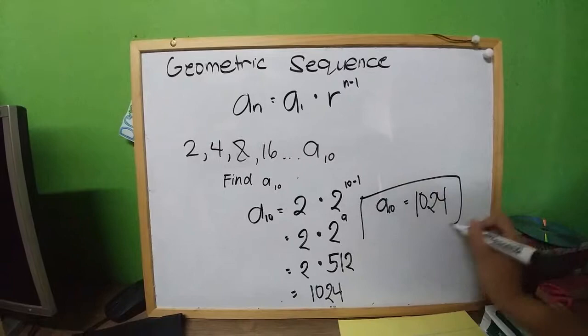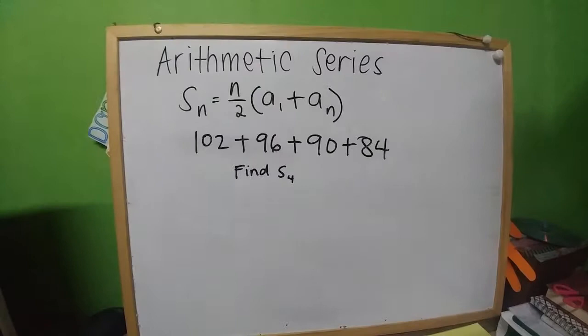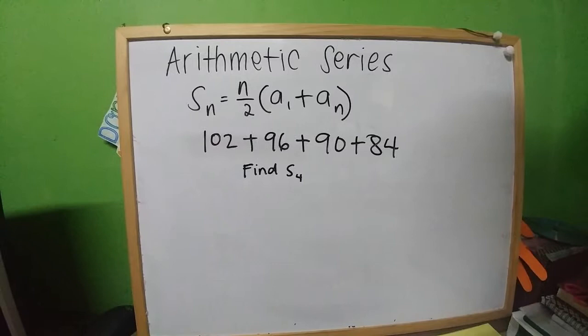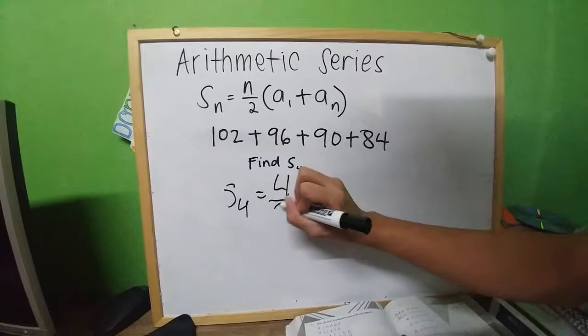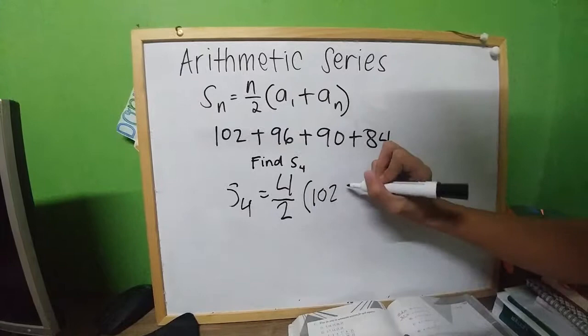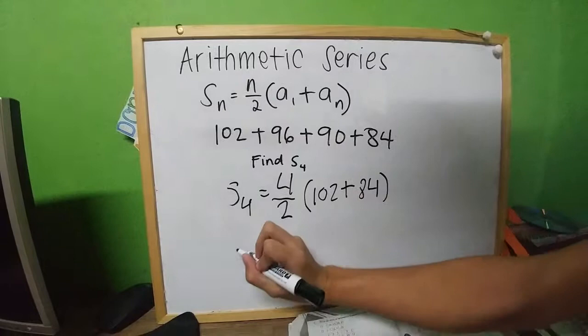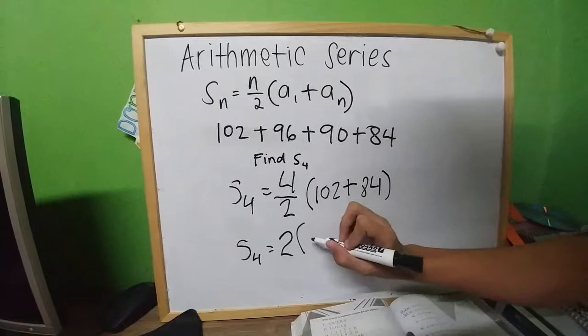This type of series is arithmetic series. The formula for arithmetic series is S sub n equals n over 2 times quantity a sub 1 plus a sub n. Given this series, let us find S sub 4. So S sub 4 is 372.